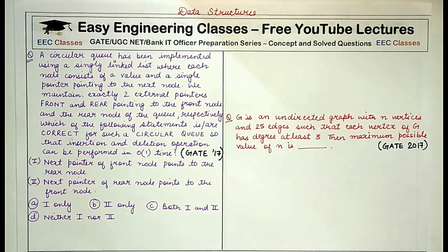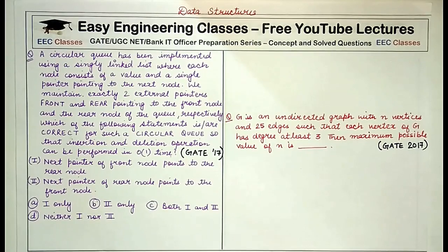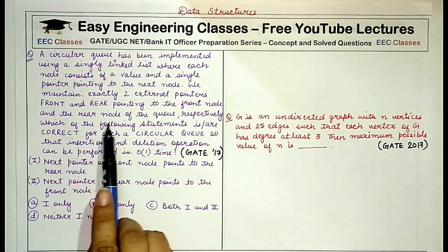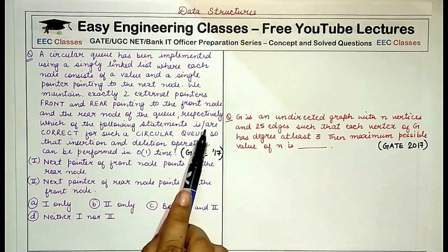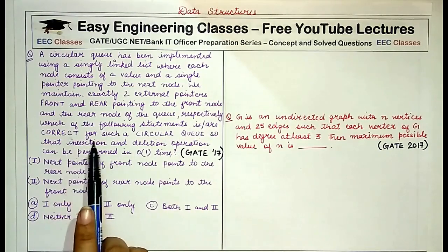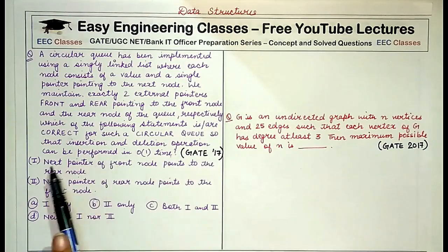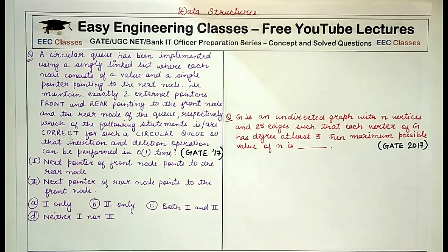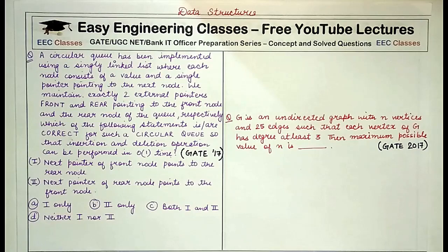The first question states that a circular queue has been implemented using a singly linked list where each node consists of a value and a single pointer pointing to the next node. We maintain exactly two external pointers — front and rear — pointing to the front node and the rear node of the queue respectively. Which of the following statements is correct so that insertion and deletion can be performed in O(1) time? Statement 1: the next pointer of the front node points to the rear node. Statement 2: the next pointer of the rear node points to the front node.